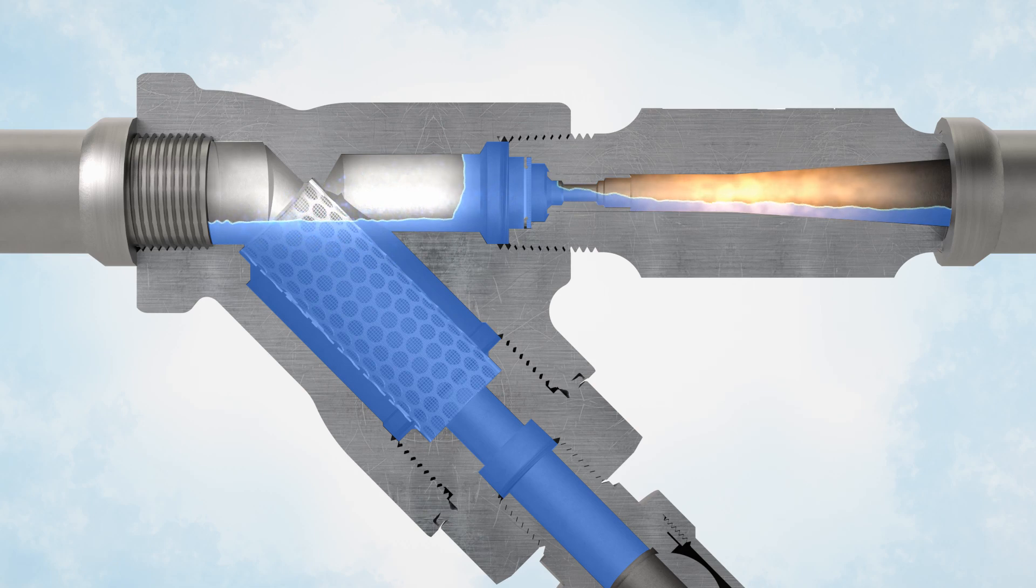The SteamGuard's modified Venturi nozzle is designed to restrict the expansion of the flash steam and create a variable local back pressure which increases and decreases with the condensate load flow rate. This varying back pressure at the modified Venturi nozzle allows the SteamGuard system to self-regulate the condensate flow as the pressure and condensate load changes.